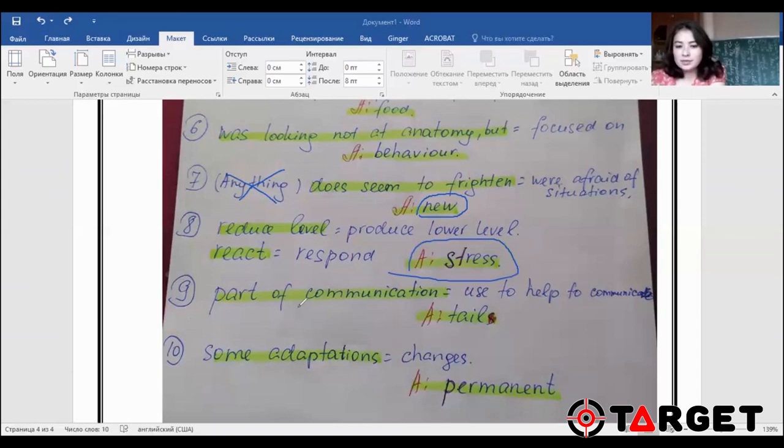Number nine, parts of communication was in the track and in the question was used to help to communicate. They use their tail or tails to communicate. And final question, some adaptations in the track, changes in the question. These changes, however, or on the other hand, are not going to be permanent, permanently stable all the time.